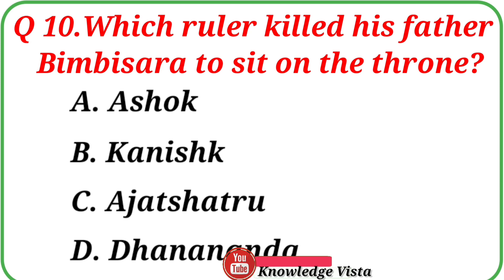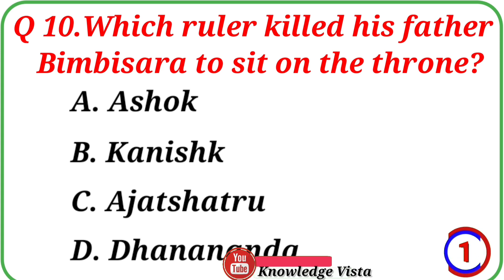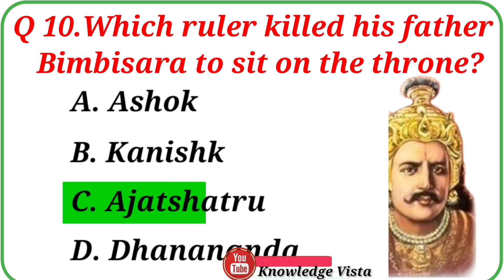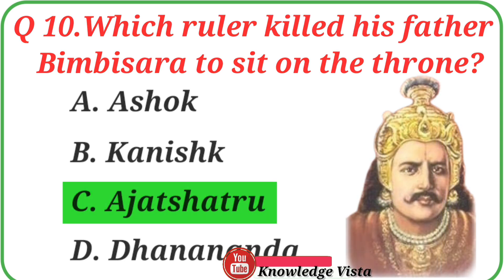Question number ten: Which ruler killed his father Bimbasara to sit on the throne? Your options are: A. Ashoka, B. Kanishka, C. Ajatashatru, D. Dhanananda. Correct answer is option C, Ajatashatru.